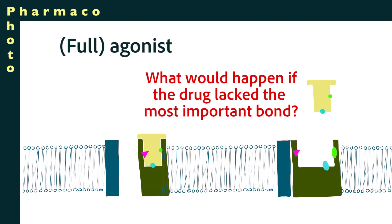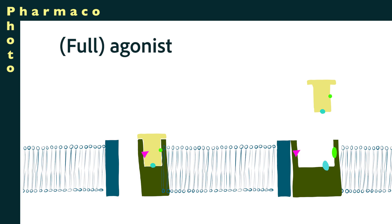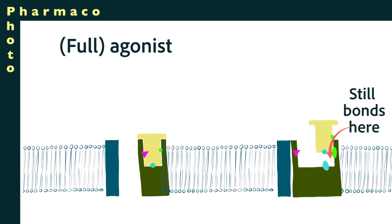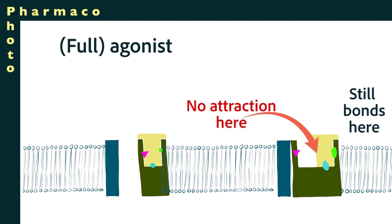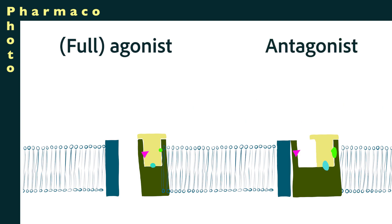What would happen if you had a drug shaped in the exact same way with the same attractant bonds, but without that strong ionic bond that allows the protein to fold the way it does with a normal ligand? In that hypothetical case the drug would probably be at the opposite end of the spectrum — it would have no physiological effect on the receptor and would be termed an antagonist, sometimes called a blocker.